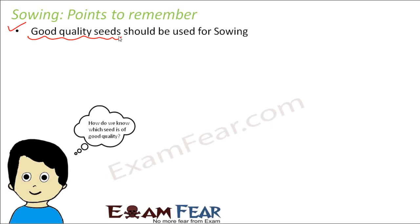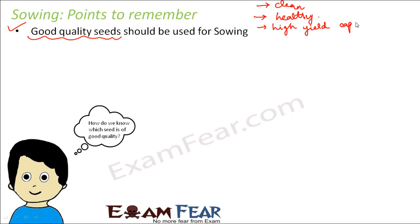Let us first try to understand what kind of seeds are said to be good quality seeds. Some of the qualities which define good quality seeds are: it should be clean, it should be healthy, and it should have high yielding capacity. If the seeds satisfy these conditions, we can categorize them as good quality seeds. They should be clean — they should not have dirt, insects, or pests. They should be healthy — they should not be diseased. And they should have high yield capacity, meaning they should be capable of giving good crop yield.